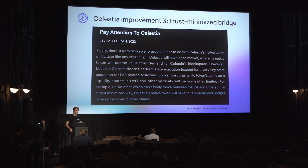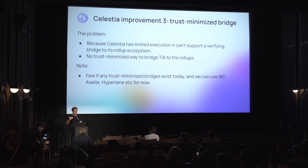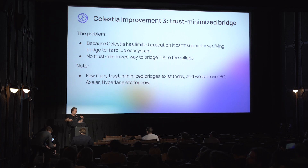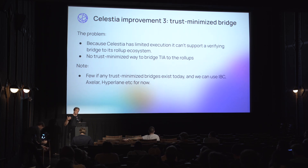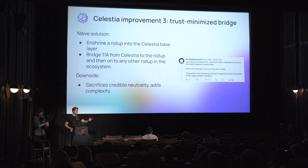Last but not least, a third idea: this is probably the number one complaint I get about Celestia's design — we don't have a way to support a trust-minimized bridge natively in the protocol. Because Celestia is so minimal, there are no smart contracts and basically no execution on-chain, which means you can't run a verifying bridge. This is a shame because one of the big selling points of rollups is trust-minimized bridges, but if Celestia has to rely on things like Axelar or Hyperlane or other trusted bridges to get the Celestia token up to the rollups, it just doesn't feel right.